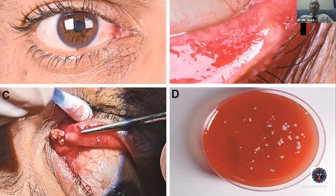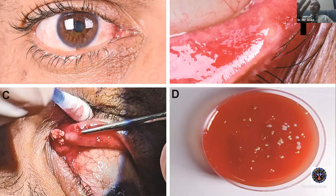If canaliculitis is not managed well, it can lead to complications such as canalicular fistula. Long-standing canaliculitis with concretions can pop out on their own — just like an abscess drains — causing a canalicular fistula. This is how the canalicular concretions appear on scanning electron microscopy.